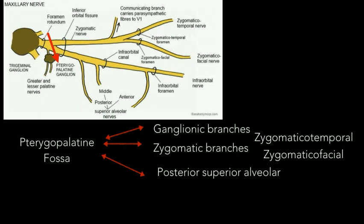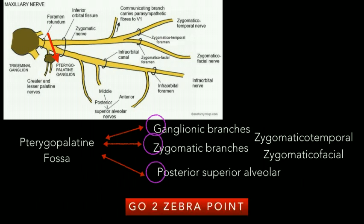To remember these branches, we take G from ganglionic branches, Z from zygomatic branches, and P from posterior superior alveolar branches. The mnemonic is 'Go to Zebra Point': G denoting the ganglionic branches and pterygopalatine ganglion, 'to' denoting the two branches of the zygomatic nerve, and P denoting the posterior superior alveolar nerve.